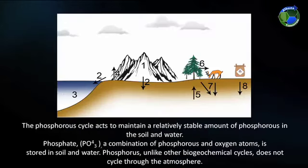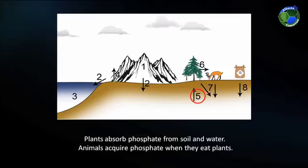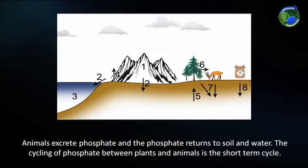The phosphorus cycle acts to maintain a relatively stable amount of phosphorus in the soil and water. Phosphate is a combination of phosphorus and oxygen atoms, and is stored in the soil and water. Phosphorus, unlike other biogeochemical cycles, does not cycle through the atmosphere. Plants absorb phosphate from soil and water. Animals acquire phosphate when they eat plants.